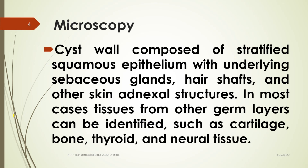On microscopy you can expect to see any tissue. If skin is visible on gross, or even if not visible on gross, you can say that stratified squamous epithelium can be seen on microscopy. If sebaceous material is visible on gross, sebaceous glands can also be seen on microscopy. Hair shafts can also be identified on microscopy, and the same structures visible on gross — cartilage, bone, neural tissue, and even thyroid tissue — can be identified on microscopy as well.